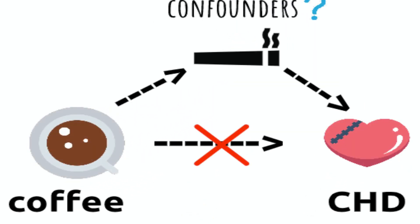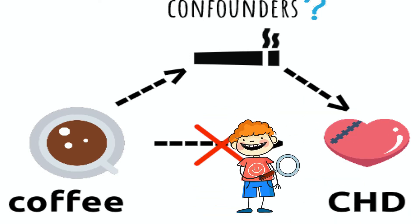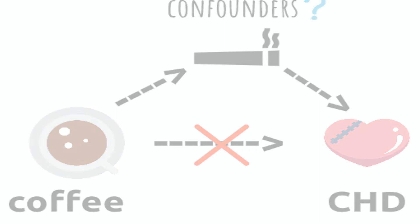There are many confounders in real life, some more obvious than others. Hence epidemiologists have to act like detectives to figure out which exposure is causing disease and which one just seems so.